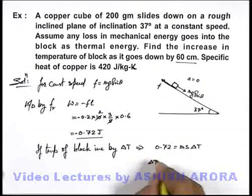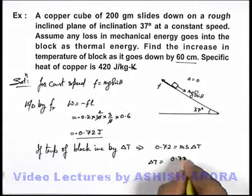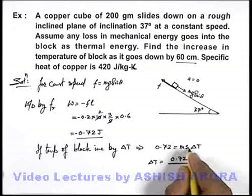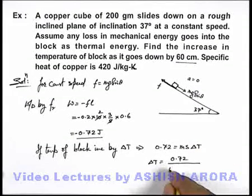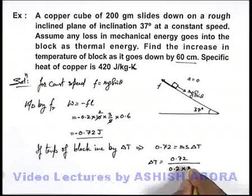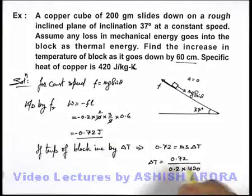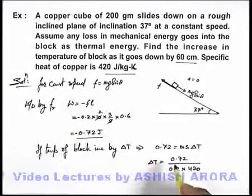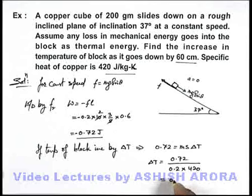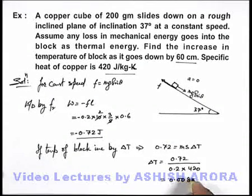So ΔT = 0.72 / (mass × specific heat) = 0.72 / (0.2 kg × 420 J/kg·K). On solving, we get ΔT = 0.00857°C. That is the answer to our problem.